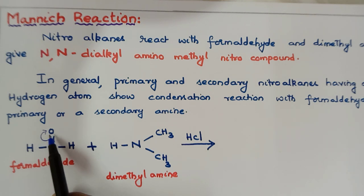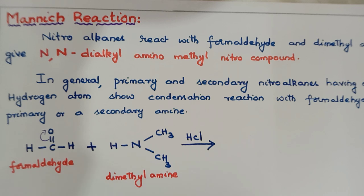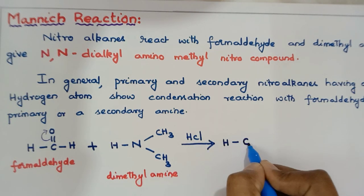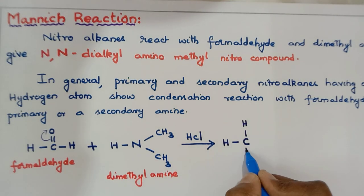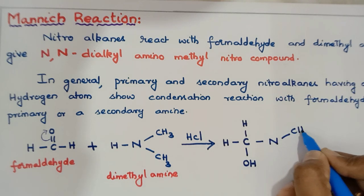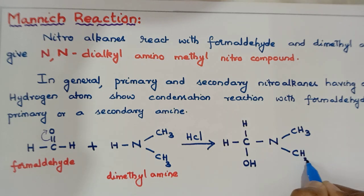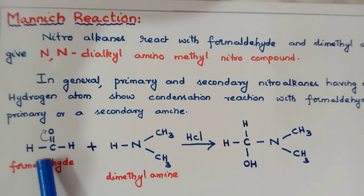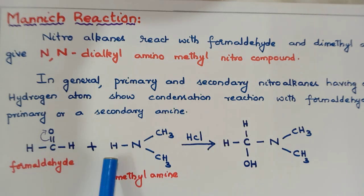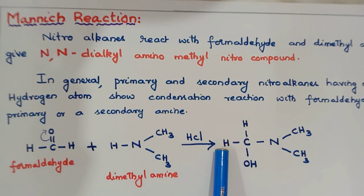Now, how does dimethylamine react with formaldehyde? After the pi electrons shift towards oxygen, dimethylamine attacks. The structure formed is H2C with OH and N(CH3)2. The oxygen becomes O minus, attracting H+ from dimethylamine to become OH. So we have the carbon with two hydrogens, an OH group, and the N(CH3)2 group attached.